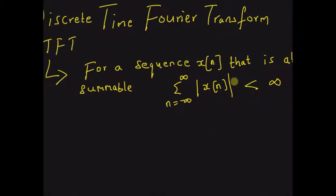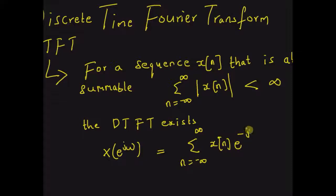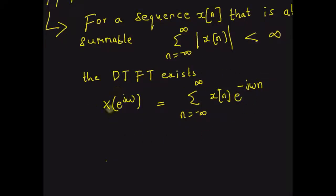Then, if this condition is satisfied, the DTFT exists and is defined as X of e to the power j omega equal to the summation n equal to minus infinity to plus infinity of x of n multiplied by e to the power minus j omega n. This is the definition of the discrete time Fourier transform.